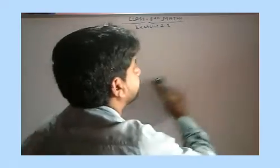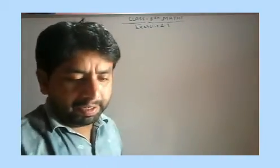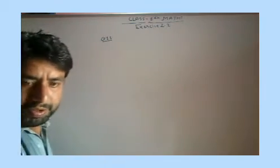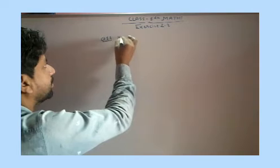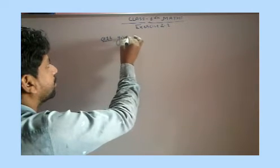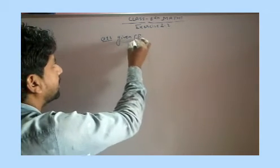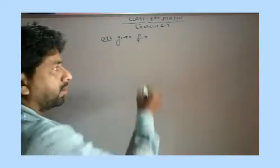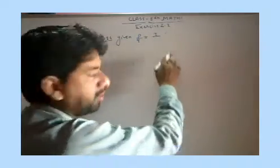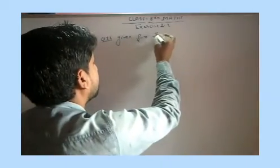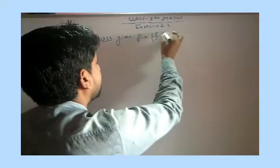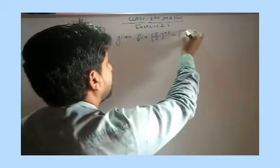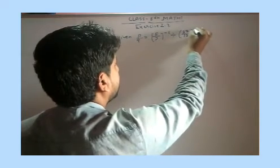Question 11. We have given: three upon two raised to the power — sorry — three upon two equals five upon three, raised to the power minus two, divided by seventeen upon nine raised to the power zero.